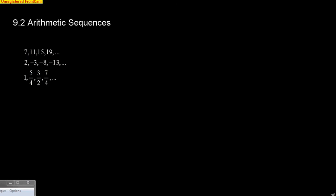First thing we want to talk about: when we see a sequence of numbers, to determine if a sequence is arithmetic or not, it has to have a common difference — meaning there has to be the same difference between each set of numbers all the way through. There's got to be a pattern that has a common difference.